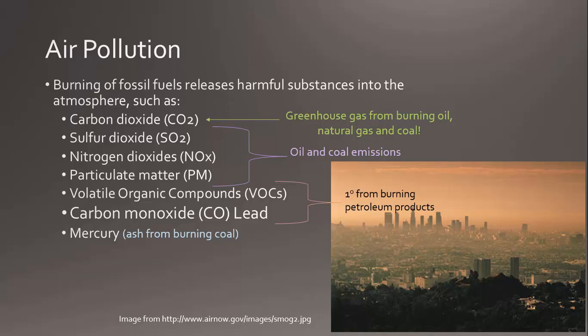So when we burn fossil fuels, this releases harmful substances into the atmosphere. There's a whole cocktail of things that gets released. Carbon dioxide, of course, is a major greenhouse gas, and that comes from burning oil, natural gas, and coal — so all of them are releasing carbon dioxide.